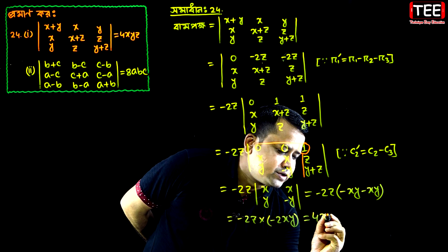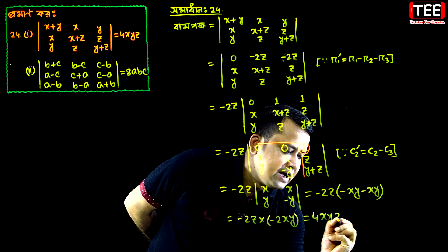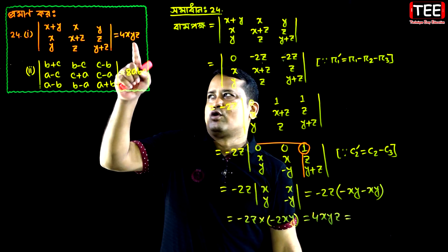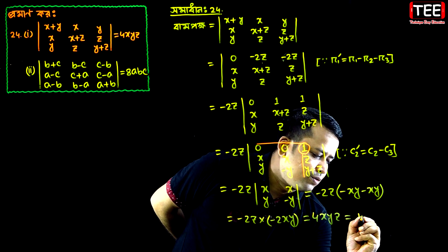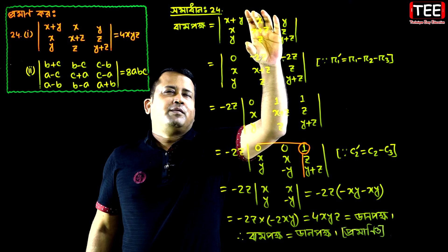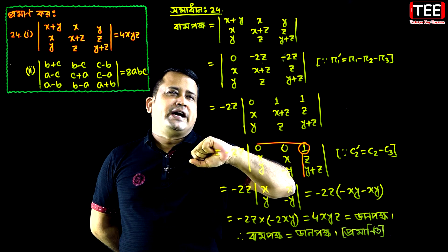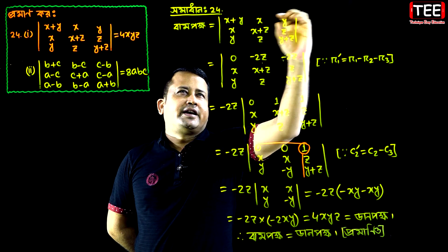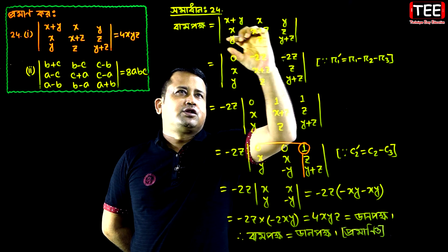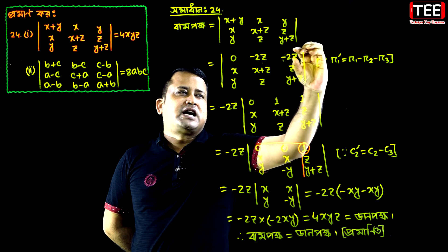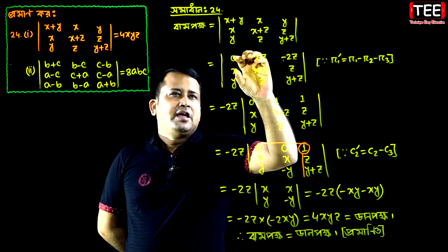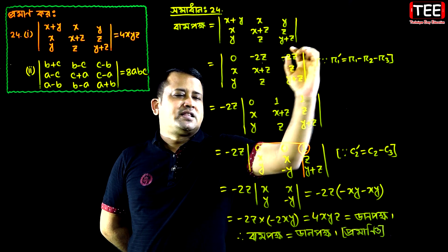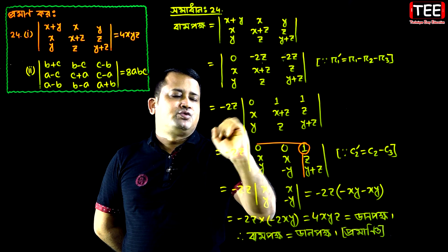So, this is 4xyz. This is the first line of xy equal to xy. The first line of xy is equal to minus 2z.